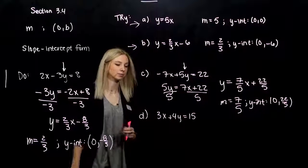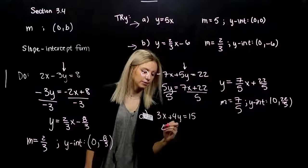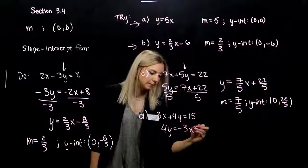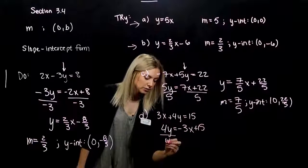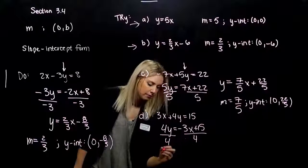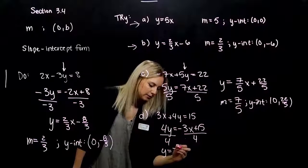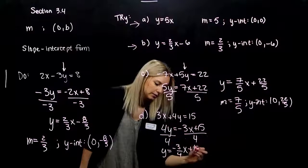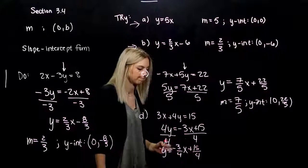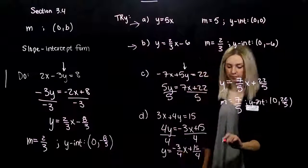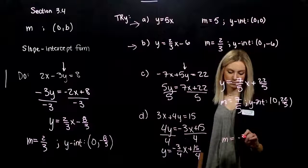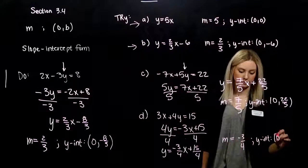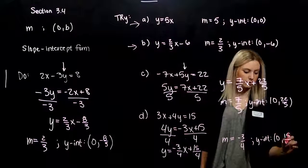And the last one. We want y on its own, so we need to move 3x to the other side. Now he'll be negative over here. I want y on its own, so we divide by 4. Y is minus 3/4x, so decreasing left to right, plus 15/4. Slope is negative 3/4, pretty small. Y-intercept is through the point (0, 15/4).